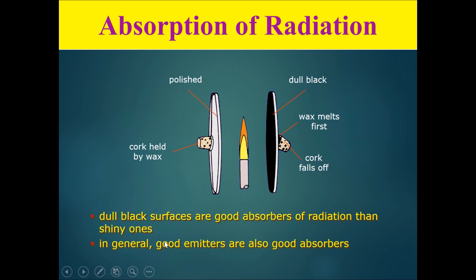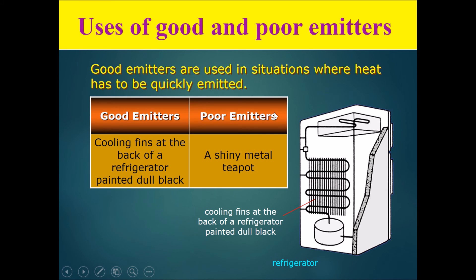In general, good emitters are also good absorbers. The black plate can both emit and absorb radiation very well, while the white plate is a poor emitter and also a poor absorber of radiation. Now, what are the uses of good and poor emitters? Good emitters are used in situations where heat has to be quickly emitted.